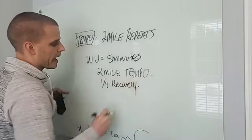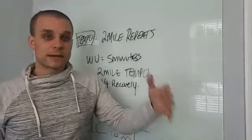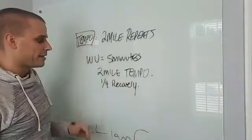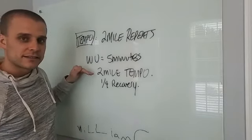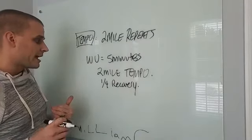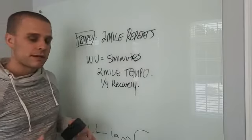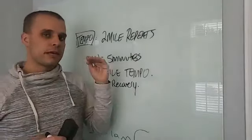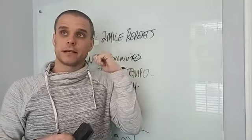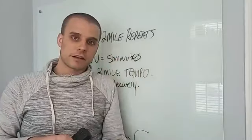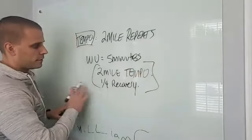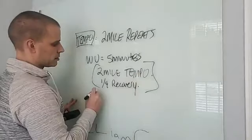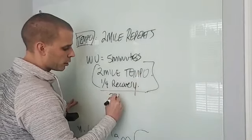And then you're going to have one quarter recovery. So let's say for easy math. I'm not saying you do this, but my simple brain needs the easy math. If you run a six minute mile tempo, that's 12 minutes. So you take a quarter of that and you have three minutes. So you'd have a three minute recovery. The recoveries can be walking. They can be very, very light jogging. But that would be your workout portion of that. And then you do repeats at this. This could be anywhere between two to four repeats.